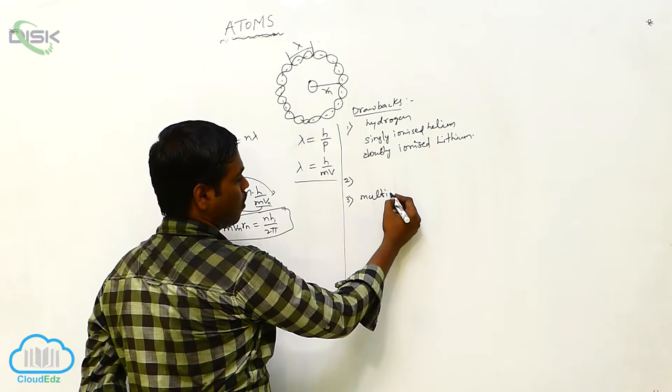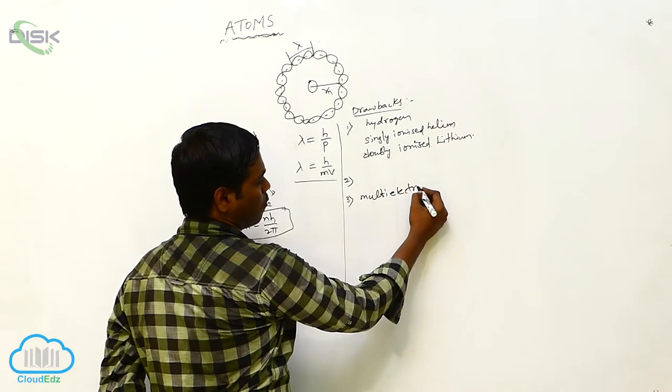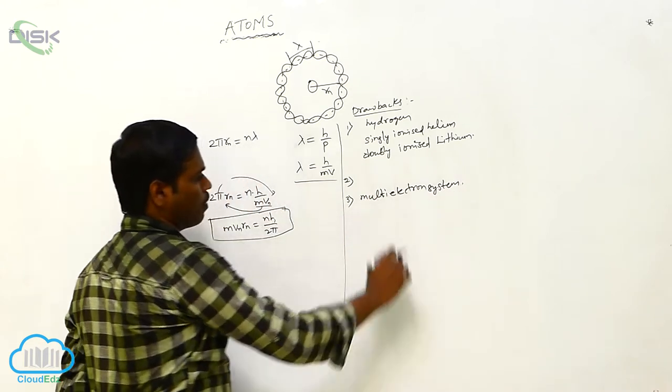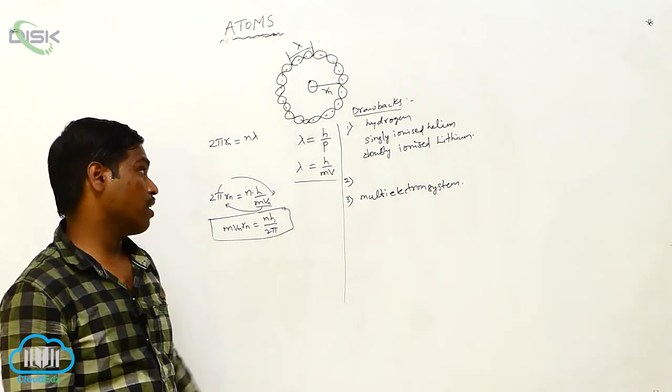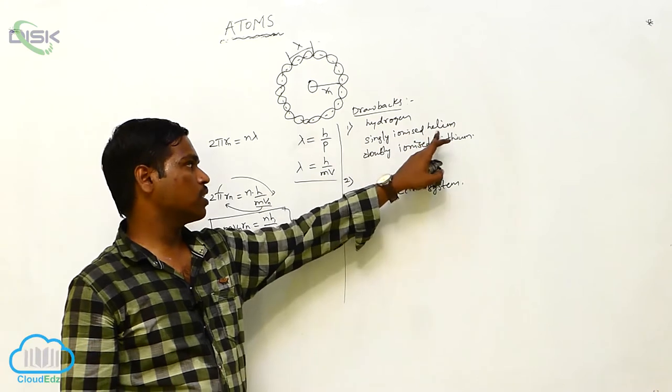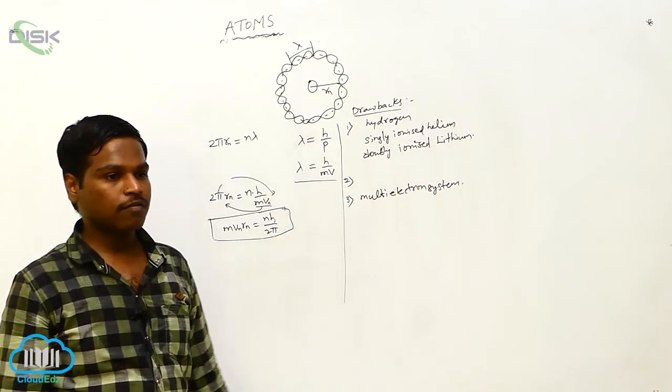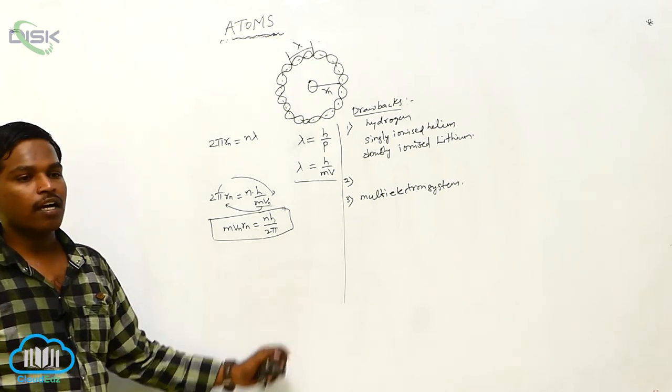Bohr's atomic model is not applicable for multi-electron systems. It is only applicable for single electron systems like hydrogen, singly ionized helium, or doubly ionized lithium. These are some drawbacks of Bohr's atomic model.